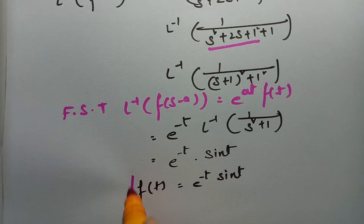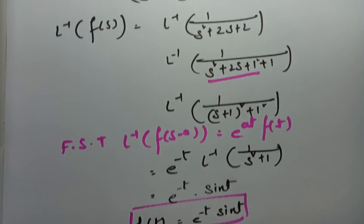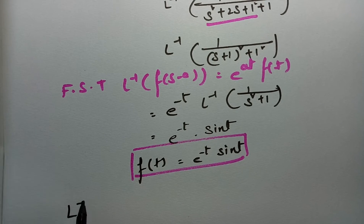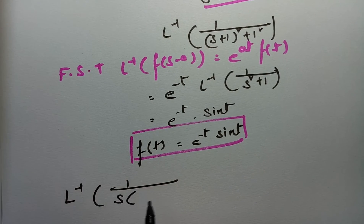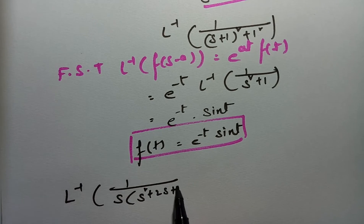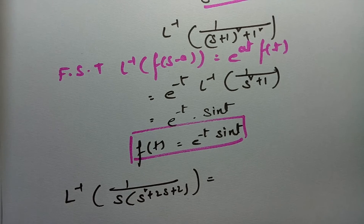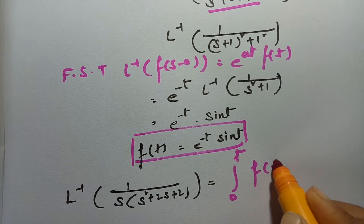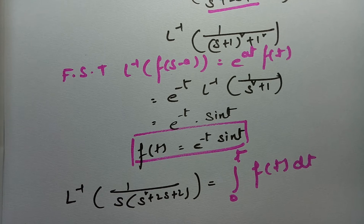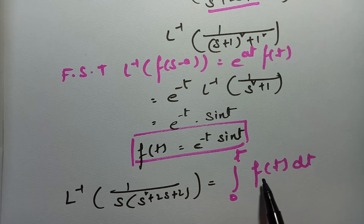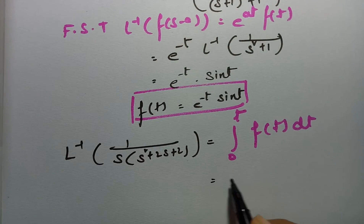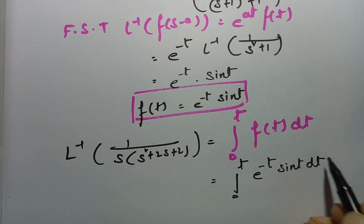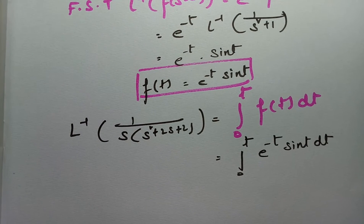Now F(s) = 1/(s²+2s+2) is divided by s, so I apply the division theorem. The inverse Laplace transform of F(s)/s = integral from 0 to t of f(t) dt = integral from 0 to t of e^{−t}·sin(t) dt. Here I use the formula: the integral of e^{ax}·sin(bx) dx = e^{ax}/(a²+b²) · (a·sin(bx) − b·cos(bx)).